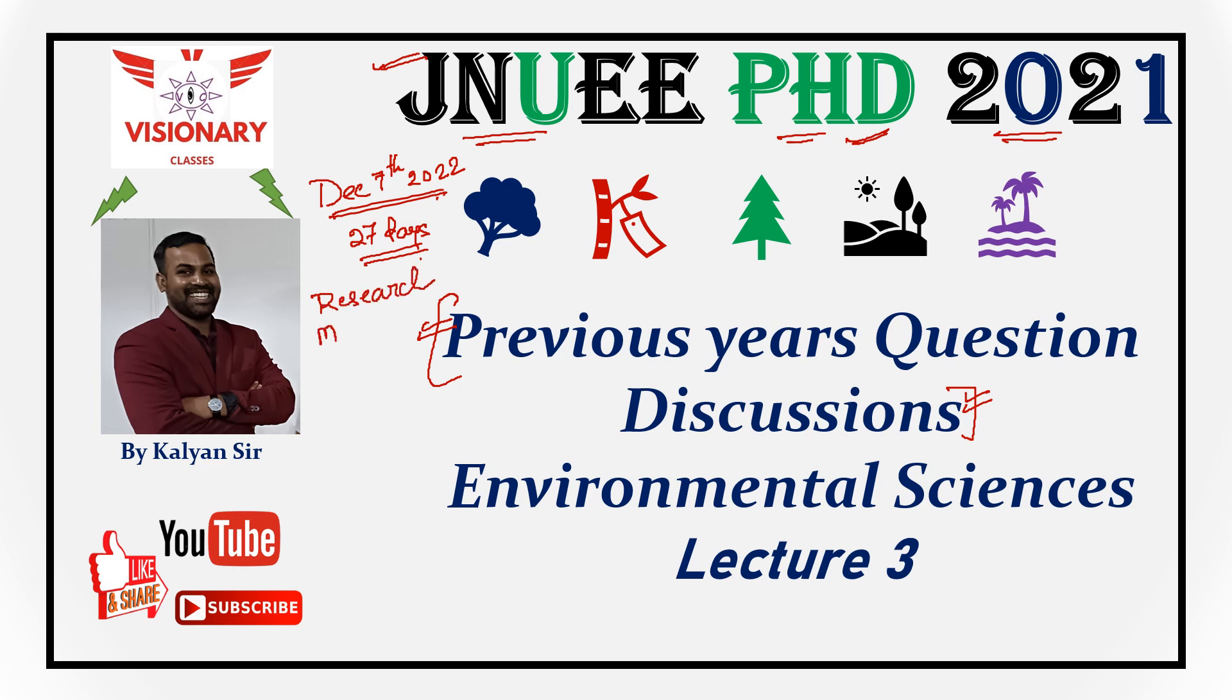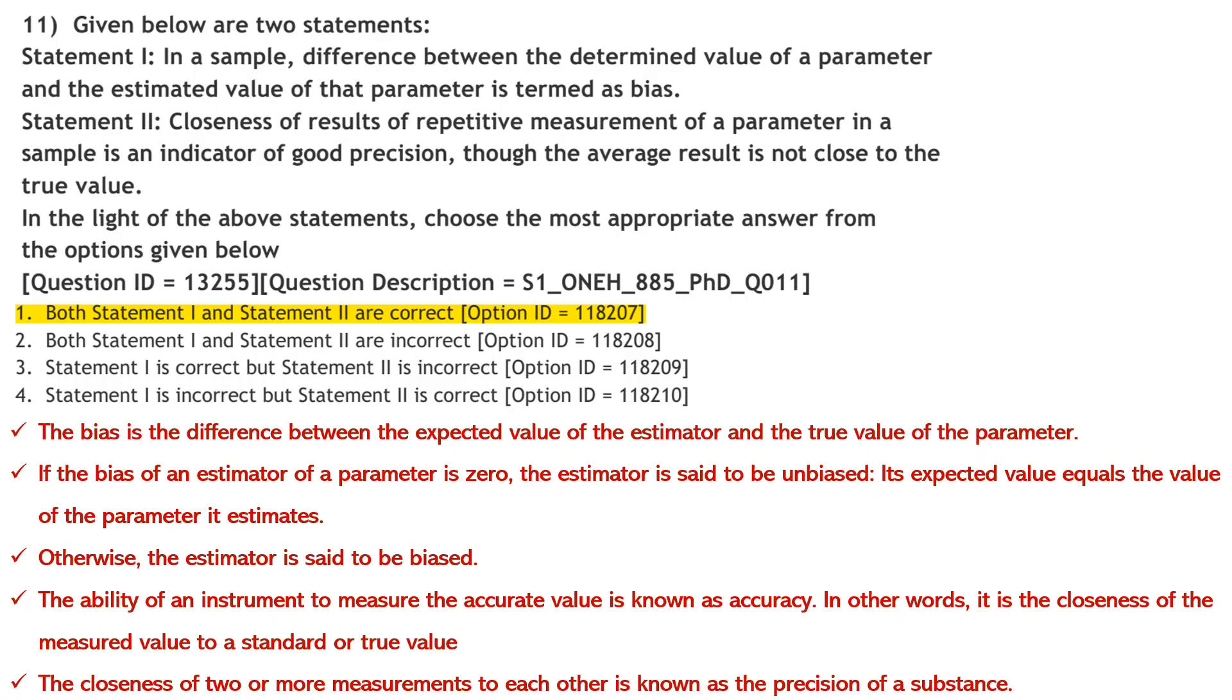We have already covered research questions, research methodology, and plagiarism related questions. Now we'll focus on instrumentation, particularly analytical chemistry. Don't miss this one - analytical chemistry questions definitely appear. Today in environmental science we're starting lecture 3. Two lectures are already complete. Study in detail, make notes, and prepare properly.